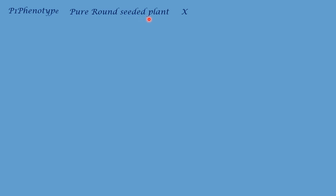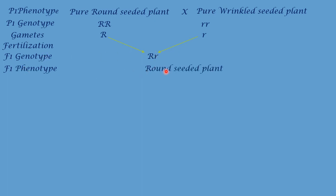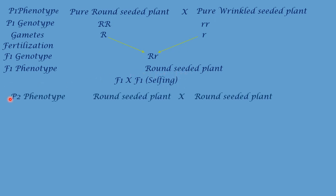Let us take the first example. P1 phenotype: pure round seeded pea plant crossed with pure wrinkled seeded pea plant. Their P1 genotype is capital R capital R crossed with small r small r. They will form gametes as capital R and small r. During fertilization, capital R fuses with small r to form capital R small r. Their phenotype will be round seeded pea plant. This round seeded pea plant is crossed with itself — this is called F1 selfing — and it becomes the second parental generation.